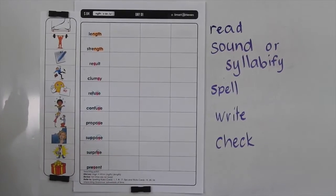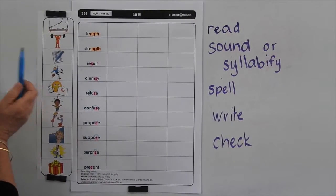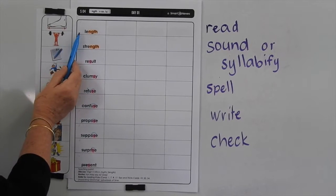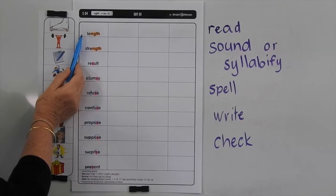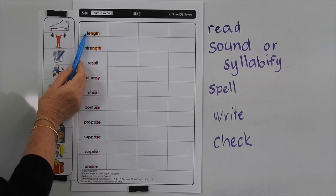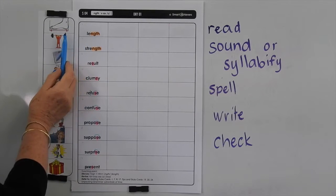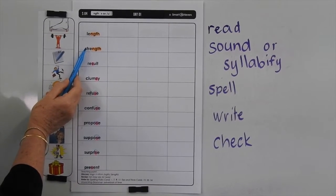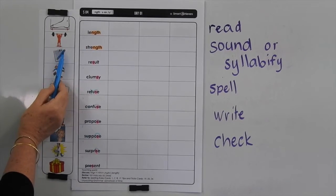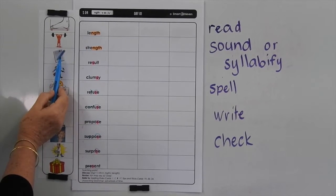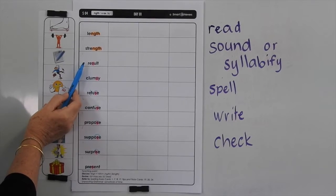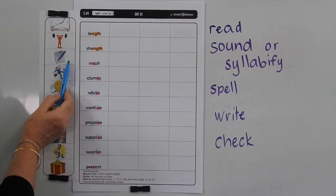Let's go through and look at what these words mean. Length means the measurement from end to end — it can be in distance or it can be in time, so it's a measurement. Strength is the quality of being strong. A result is the outcome of something.